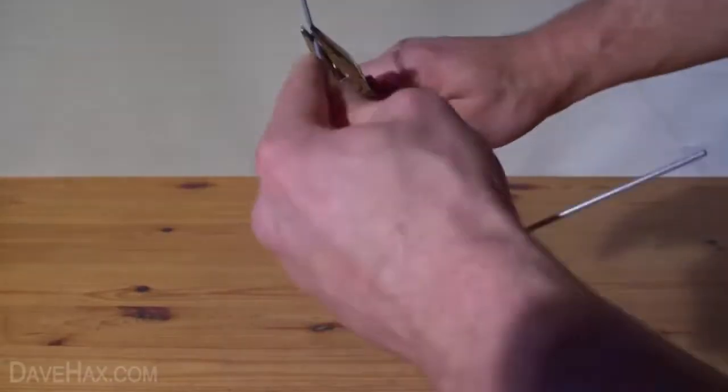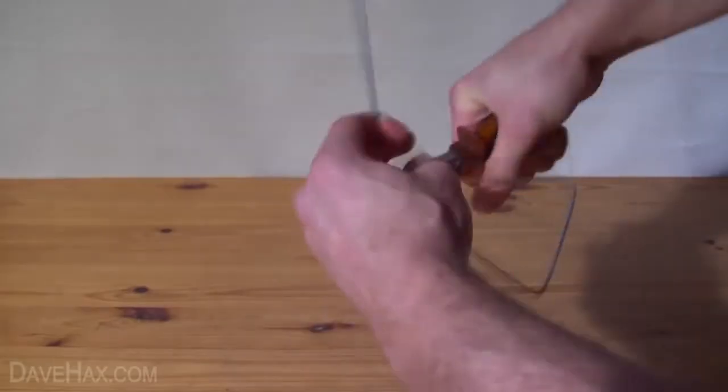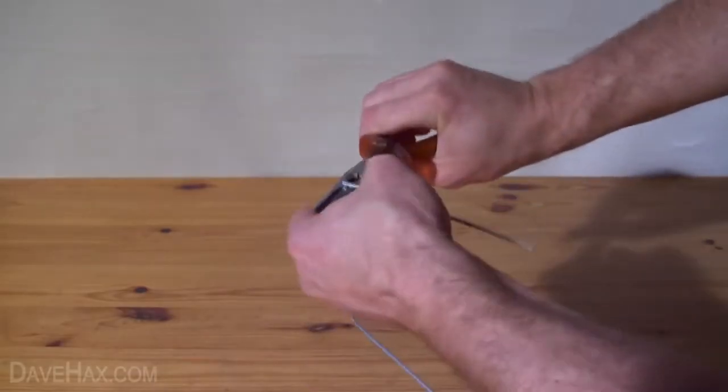Next we need to bend it into a triangle at the points we've marked. Then bend up the 12cm upright and the 12cm support bar.